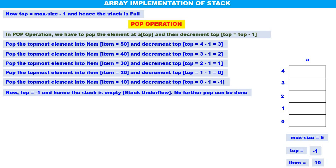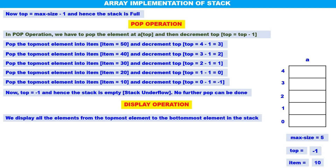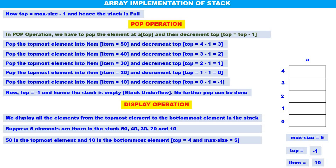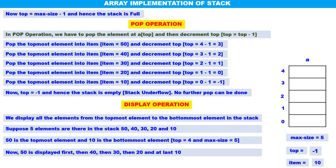In display operation, we display all the elements from the topmost element to the bottom most element in the stack — from the top position to the bottom most position. Suppose five elements are there in the stack: 50, 40, 30, 20, 10. 50 is the topmost element, 10 is the bottom most element, top is equal to 4, max size is 5. 50 should be displayed first, then 40, then 30, then 20, then 10.